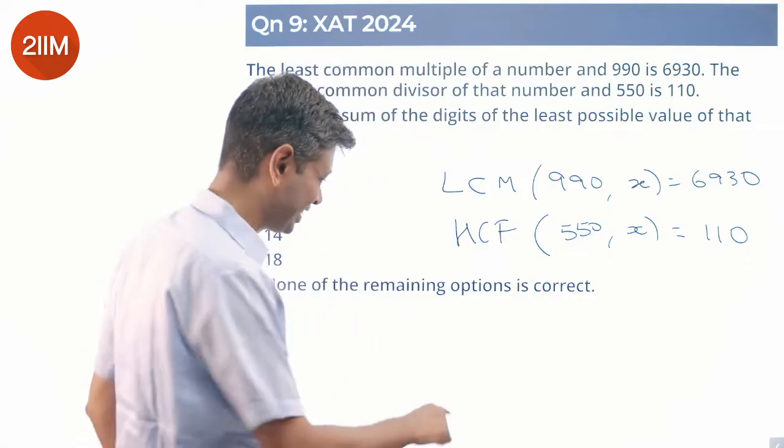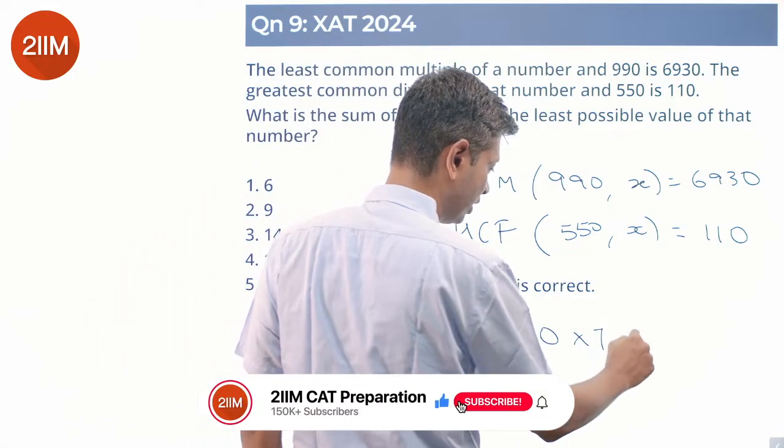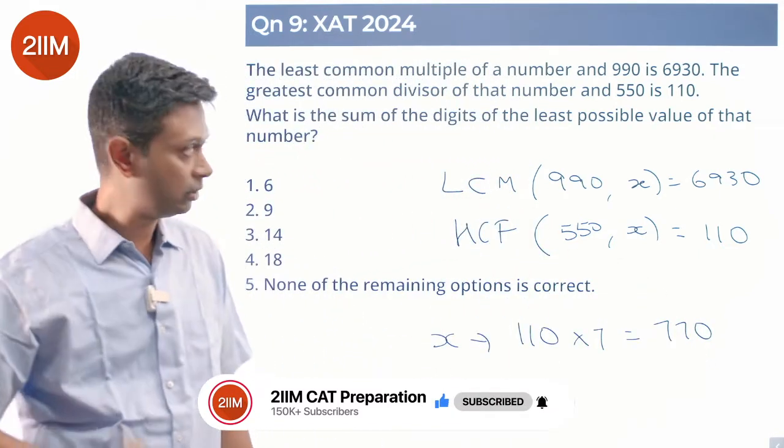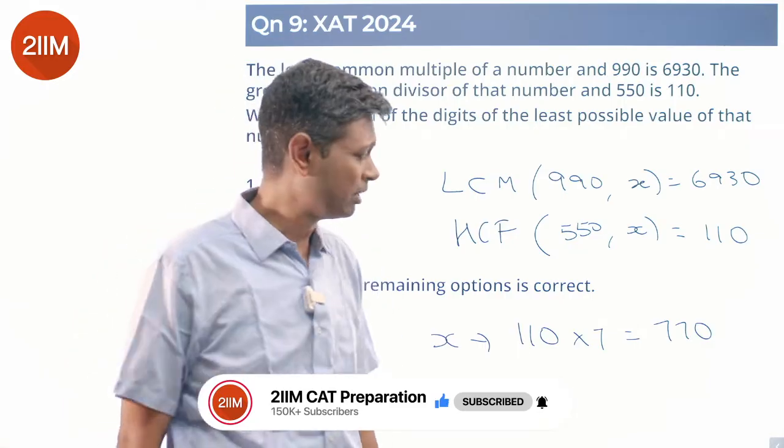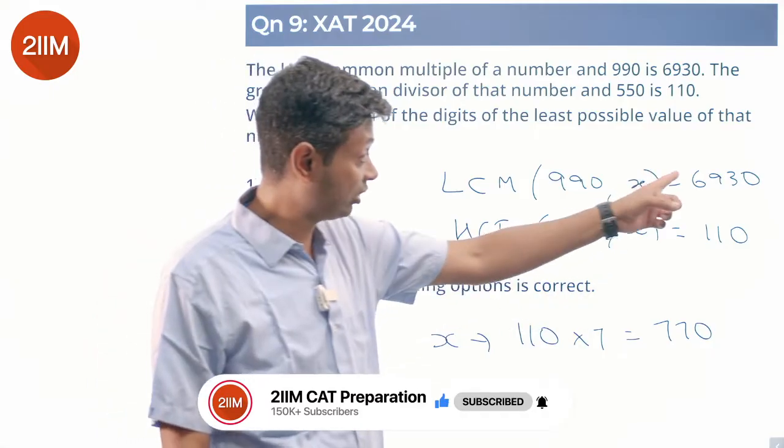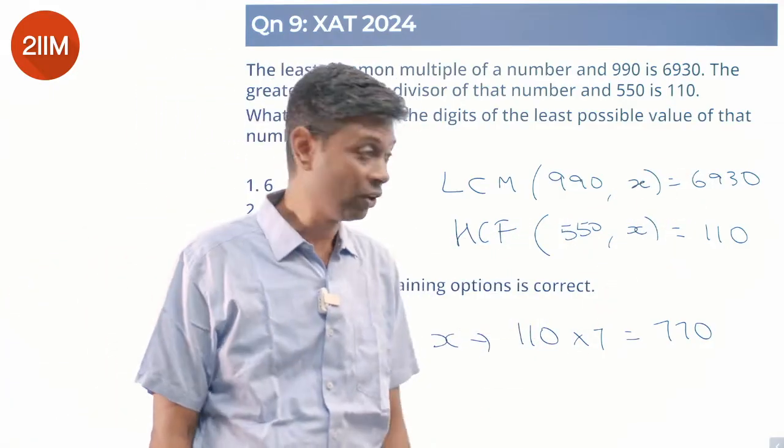X should have 110 and 7 in it. It should have 770 in it. It could be a multiple of 770 - it need not be 770 itself. Could be some multiple of 770 which happens to be a factor of 6930, which will automatically be a multiple of 110. It cannot have another 5 in it.